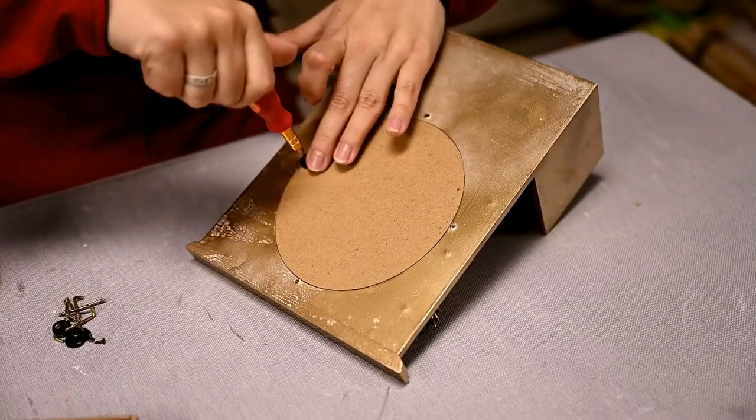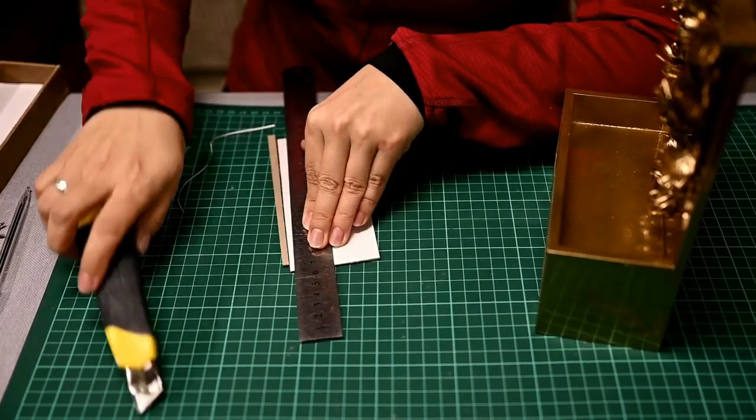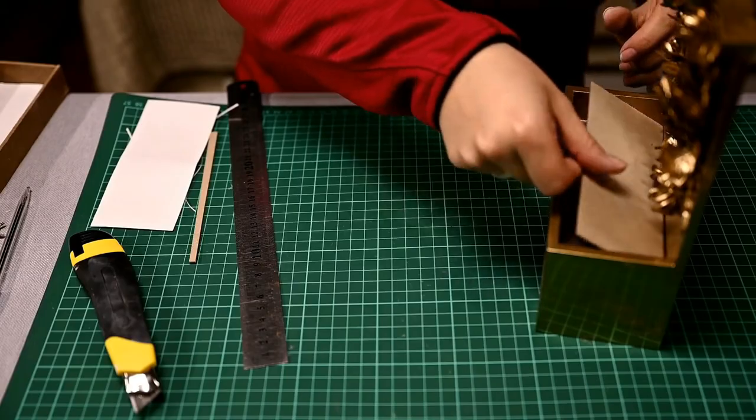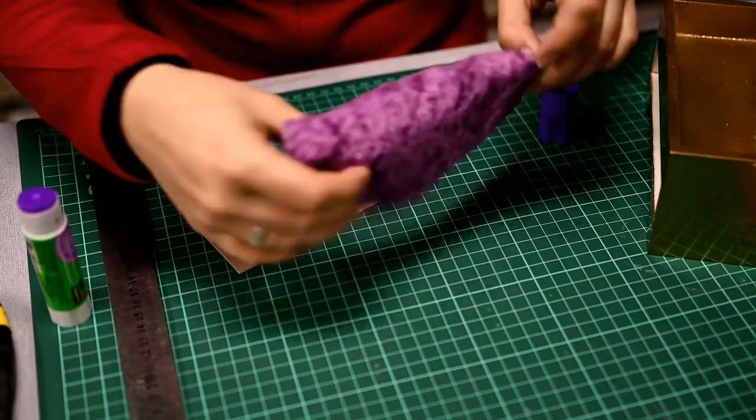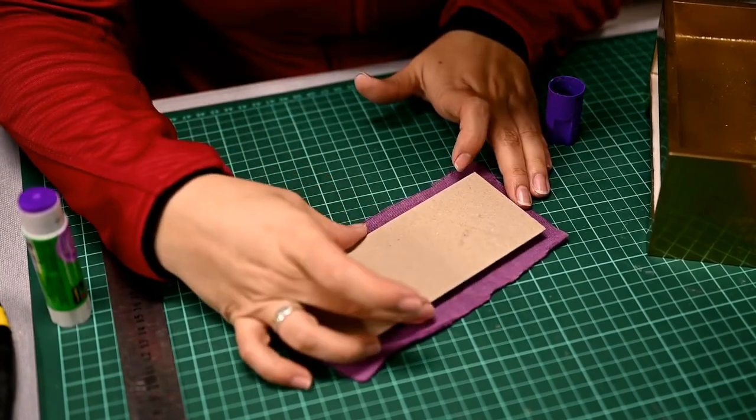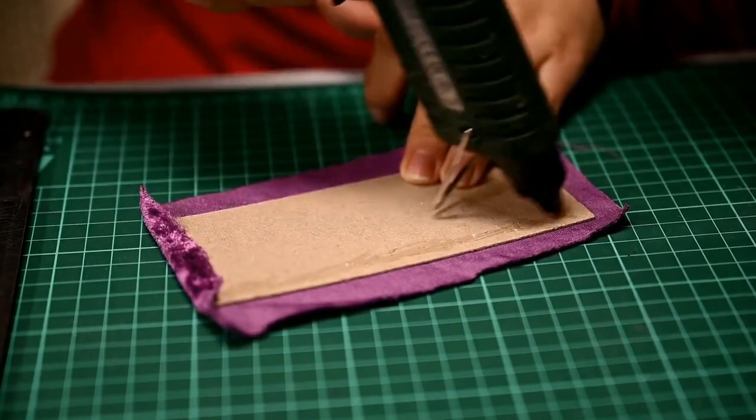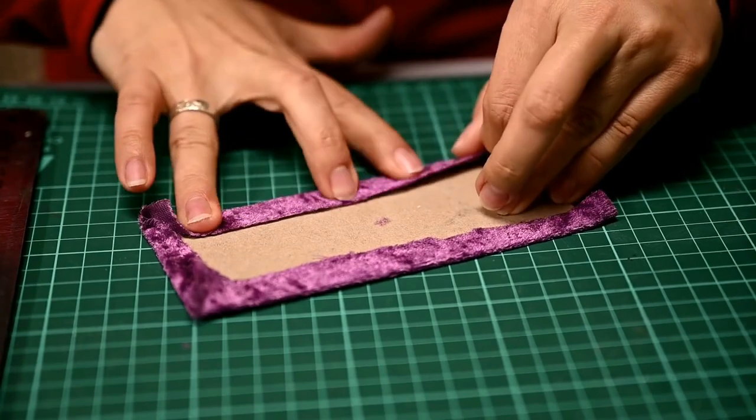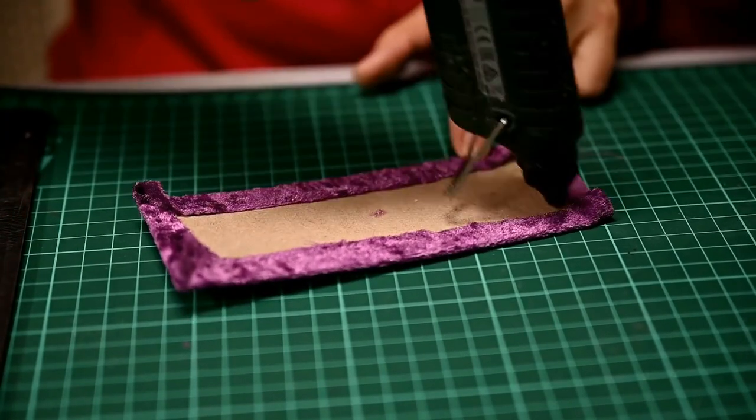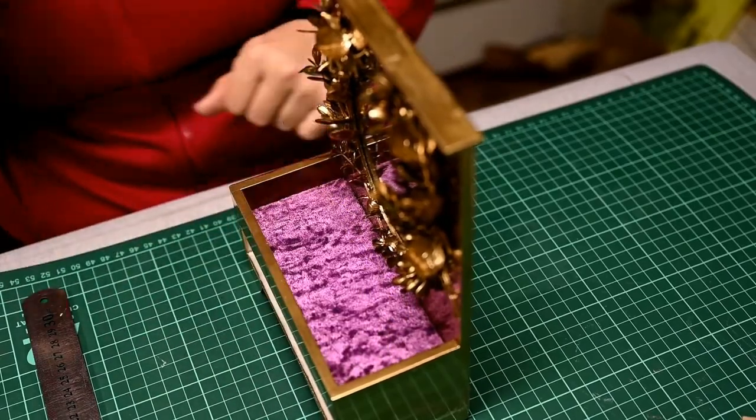I've decided to make a soft insert here so that the jewelry lays on the fabric and doesn't get any scratches. I'm cutting out a cardboard rectangle large enough to fit into the bottom. Then I'm smearing the cardboard with a glue stick and laying it on a piece of fabric. I'm using purple velvet here. I'm folding the edges of the fabric and hot gluing them to place and placing the insert into the organizer.